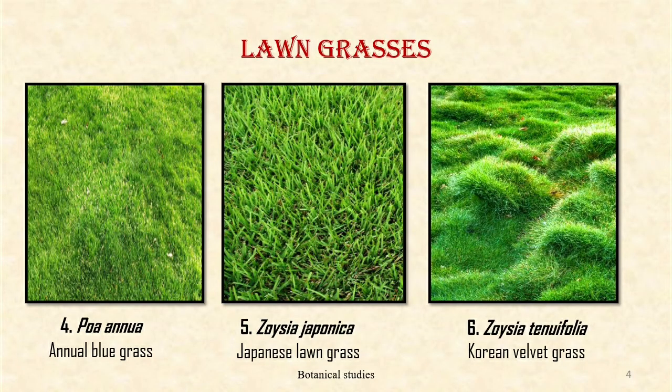Poa annua, commonly called as annual blue grass or annual meadow grass. The texture of this grass is medium fine and it is suitable for acid soils and higher elevations.